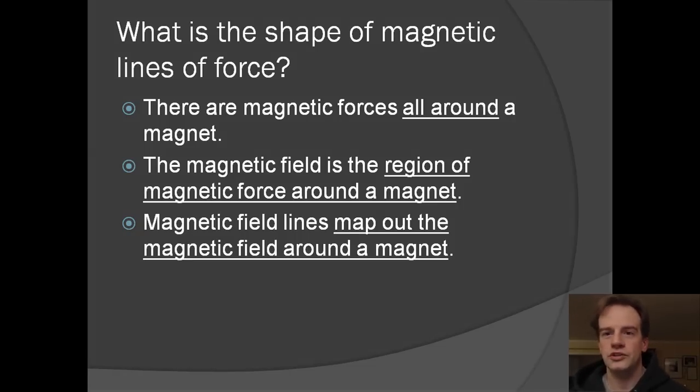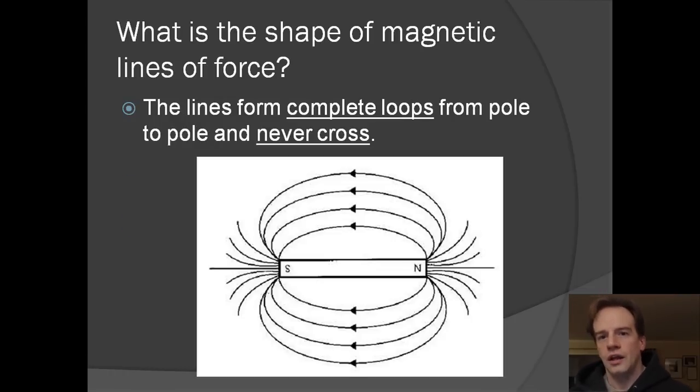So what is the shape of magnetic lines of force? Well there are magnetic forces all around a magnet. The magnetic field is the region of magnetic force around a magnet. Magnetic field lines map out the magnetic field around a magnet. And the lines form complete loops from pole to pole and never cross.